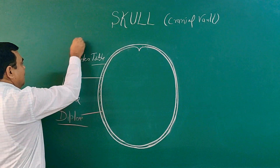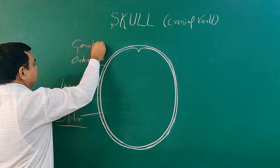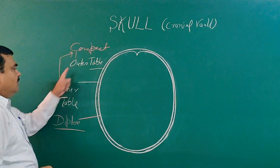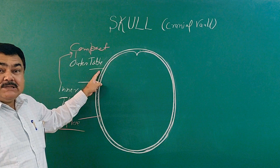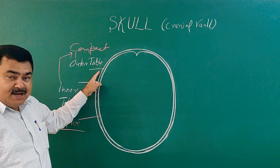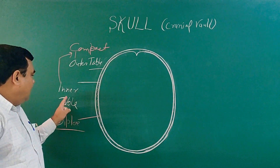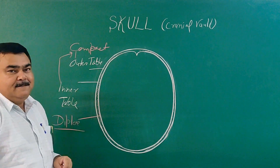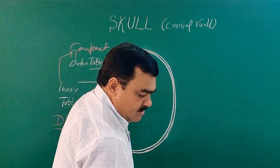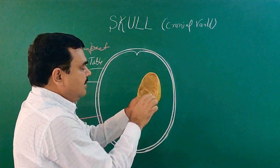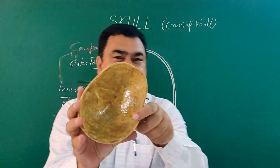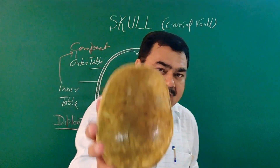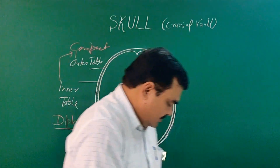The inner table and outer table are both compact bone. The outer table is thin and resilient, while the inner table is thin and brittle. In the interior you can see the inner table is thin, and in this table you can see several markings.